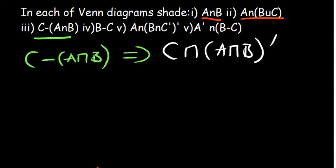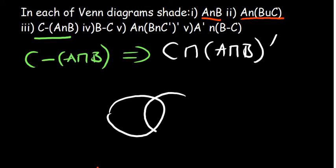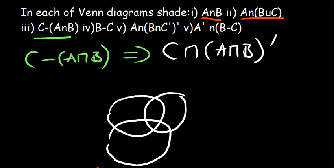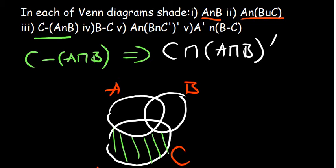If you want to understand it better, we can shade it. We have the three sets A, B, and C. C minus A intersection B means we're interested in the region that is part of C — the entire region of C. Now we are trying to exclude the part that is part of the intersection of A and B. The intersection region is this one, so we exclude that part. What we're going to remain with is basically just this part, because we're looking at the part of C excluding A intersection B. The intersection is shaded in red, so the remaining part — the green part — is what we're interested in.